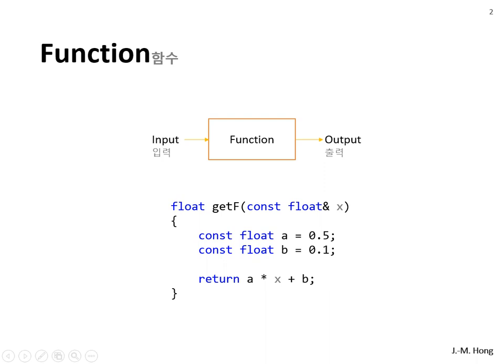Here is a prototype of the function. This is a simple get_f function. It returns a float number after calculating a number based on the input value x. The return number is a times x plus b. In this example, a is 0.5 and b is 0.1. So if x equals 0, the return is 0.1, and if x equals 1, the return is 0.6. It's simple algebra.